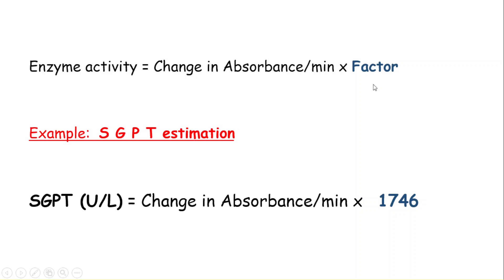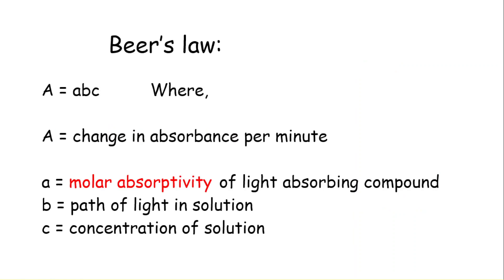Let me show you by an example. For enzyme SGPT activity calculation, the factor is 1746. Before going into this factor 1746 calculation, you need to know about Beer-Lambert law: A equals a·B·C.